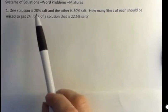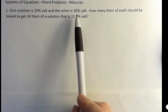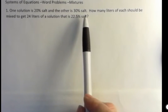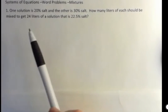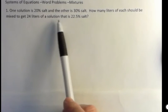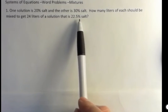This one says one solution is 20% salt and the other is 30% salt. How many liters of each should be mixed to get 24 liters of a solution that is 22.5% salt?